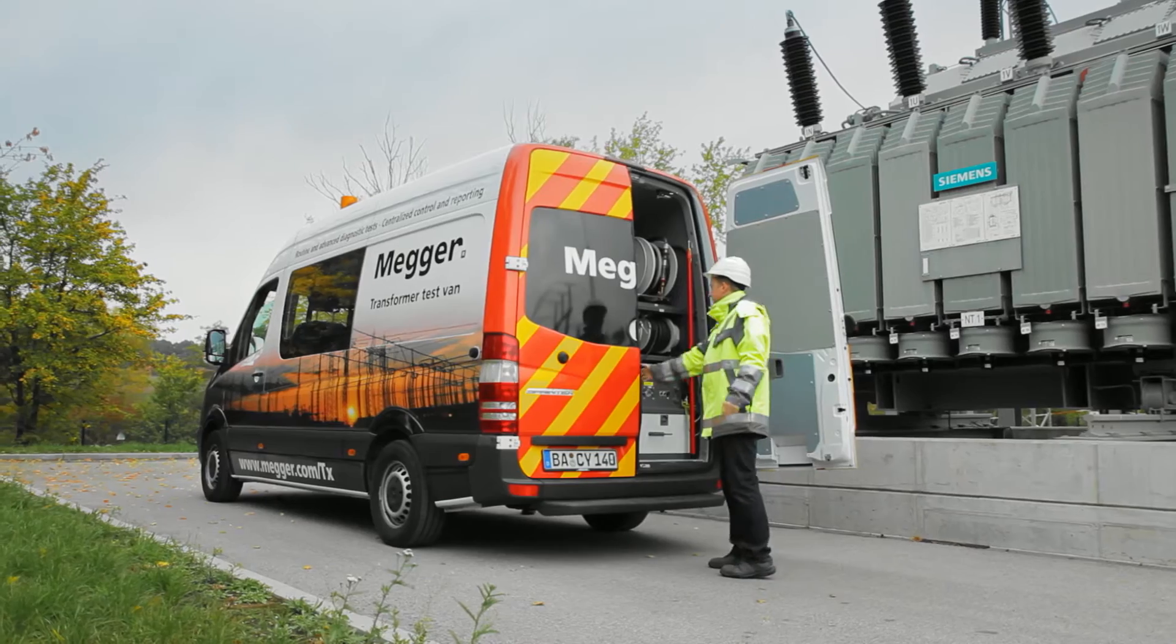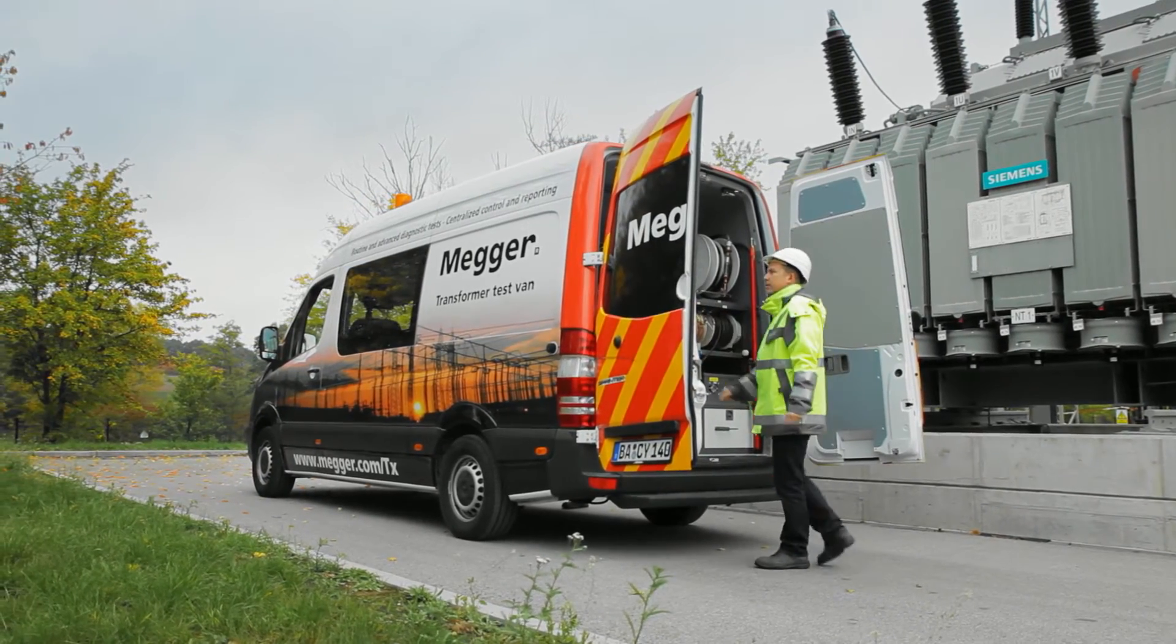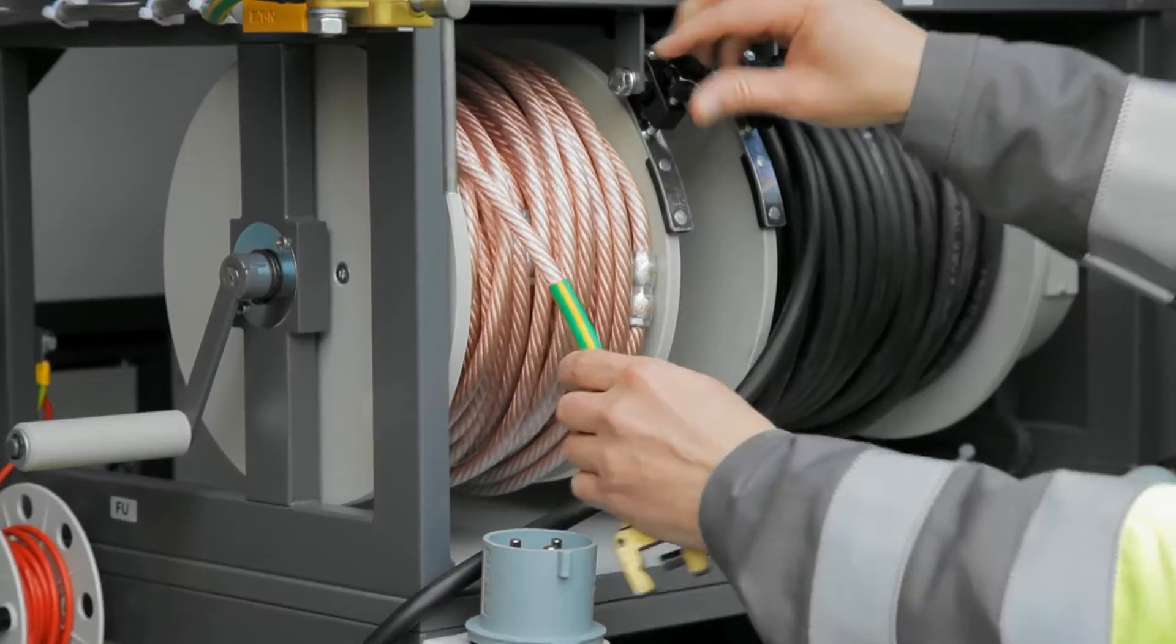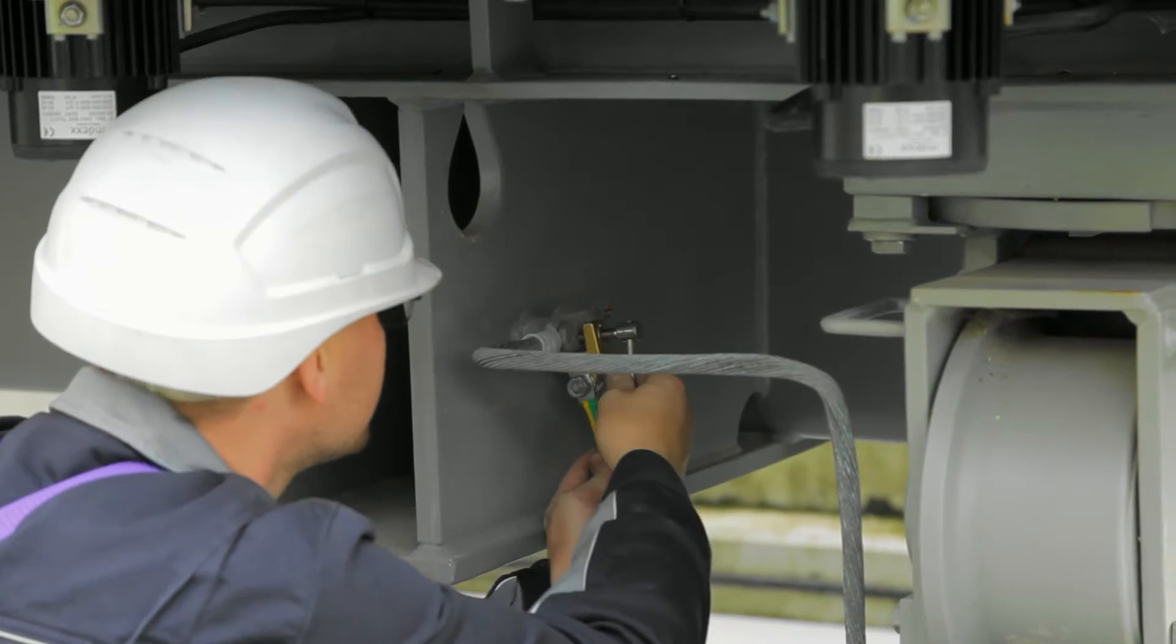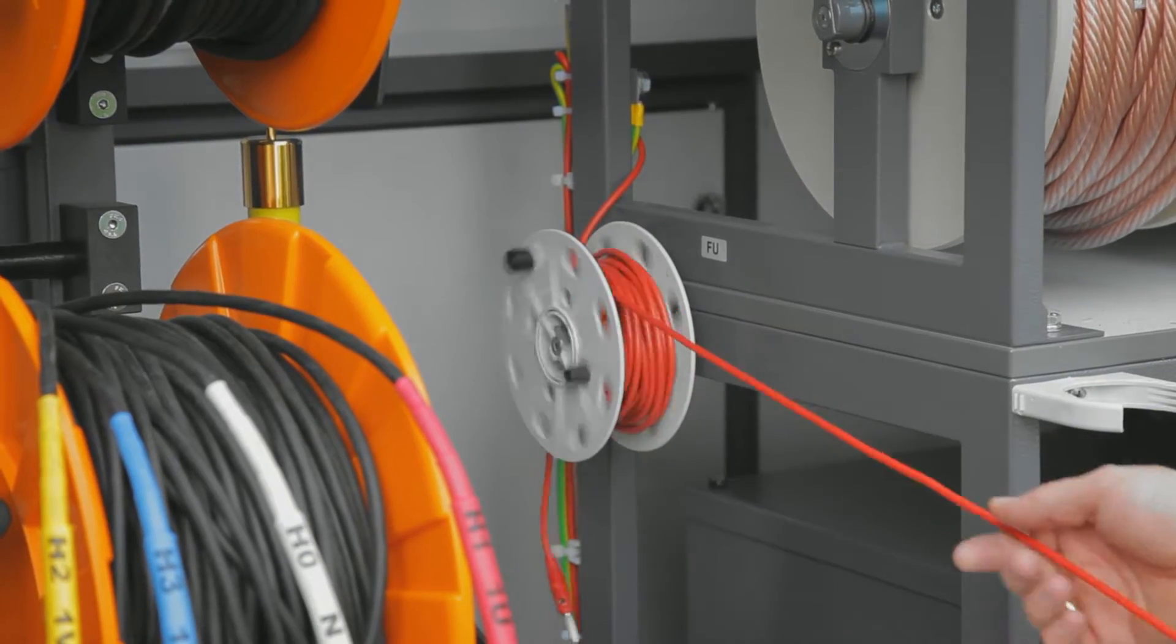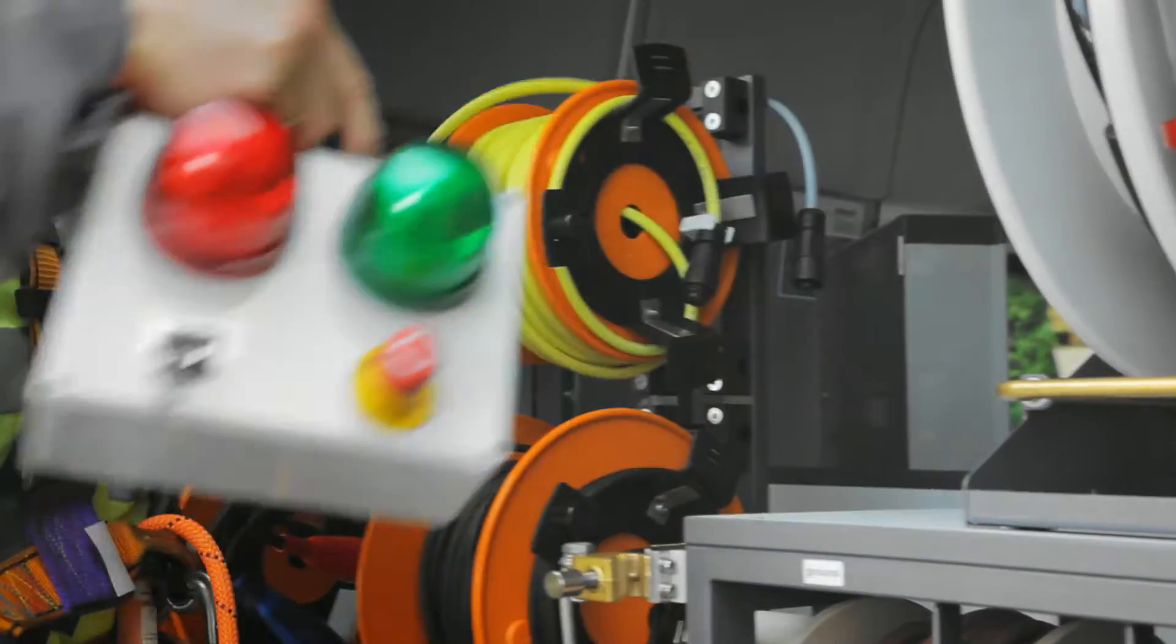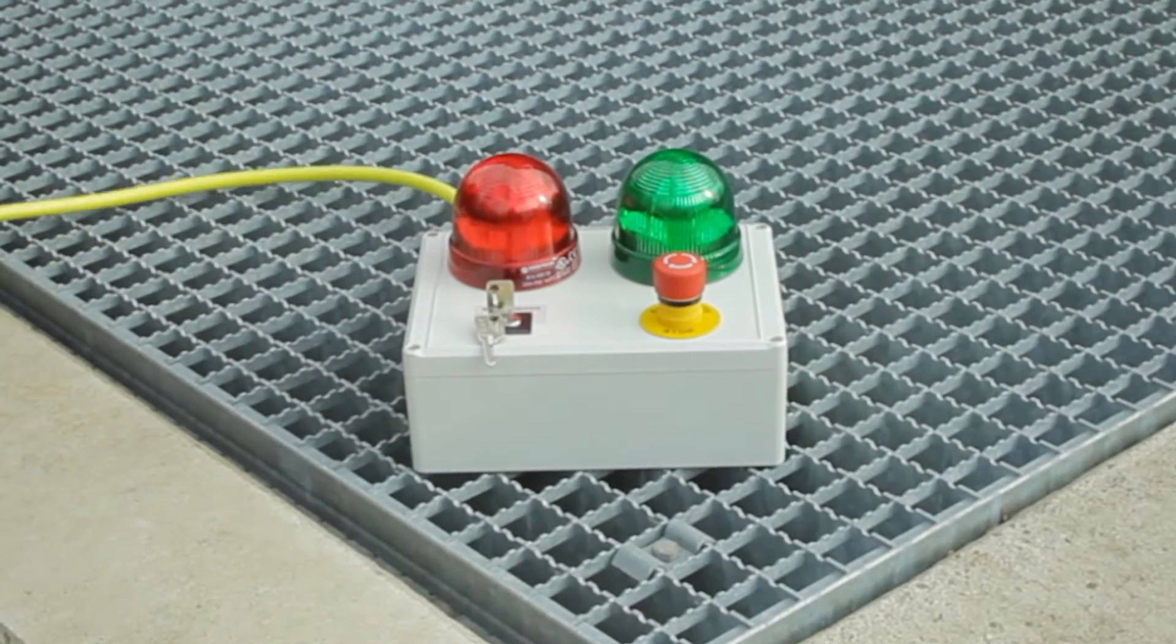The biggest advantage of the transformer test van solution compared to separate or multifunctional instruments is its immediate readiness to test. All leads are on reels pre-connected to the test instruments. Software-controlled switching eliminates manual reconfiguration, improving productivity, safety and user comfort, not to mention the air-conditioned office-like working environment of the van itself.